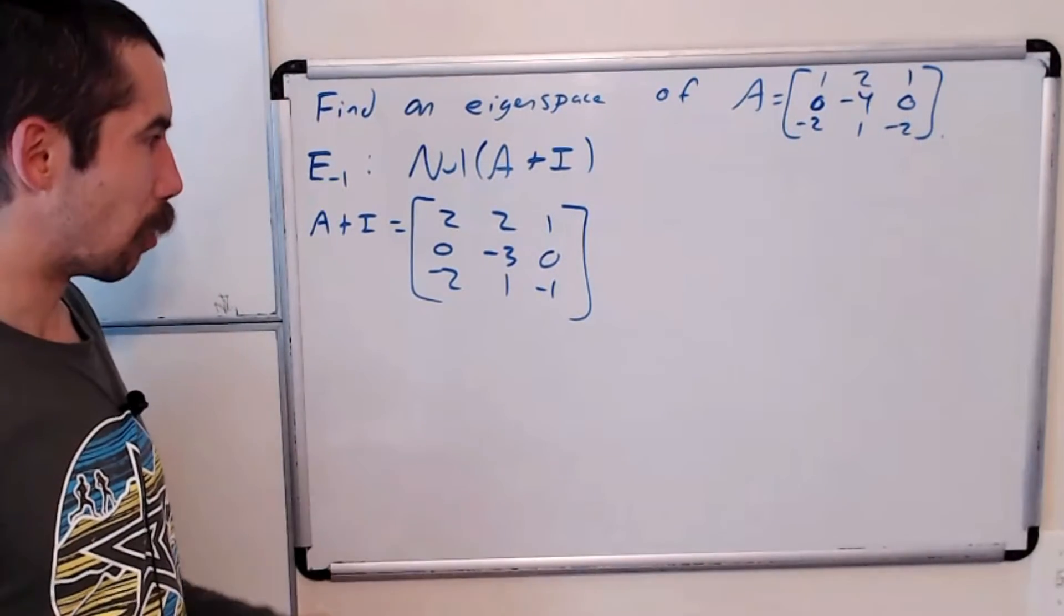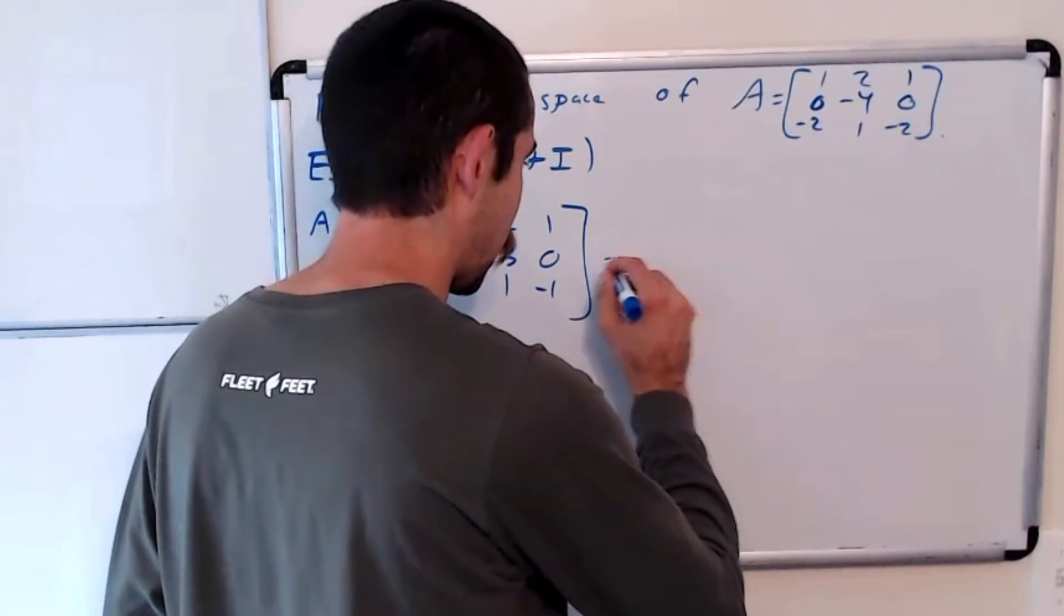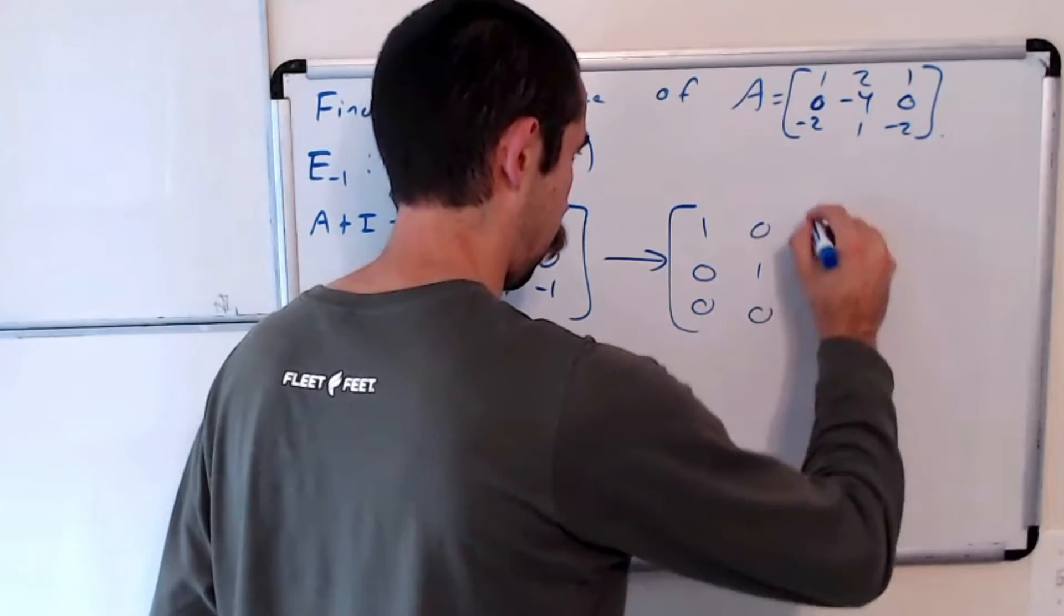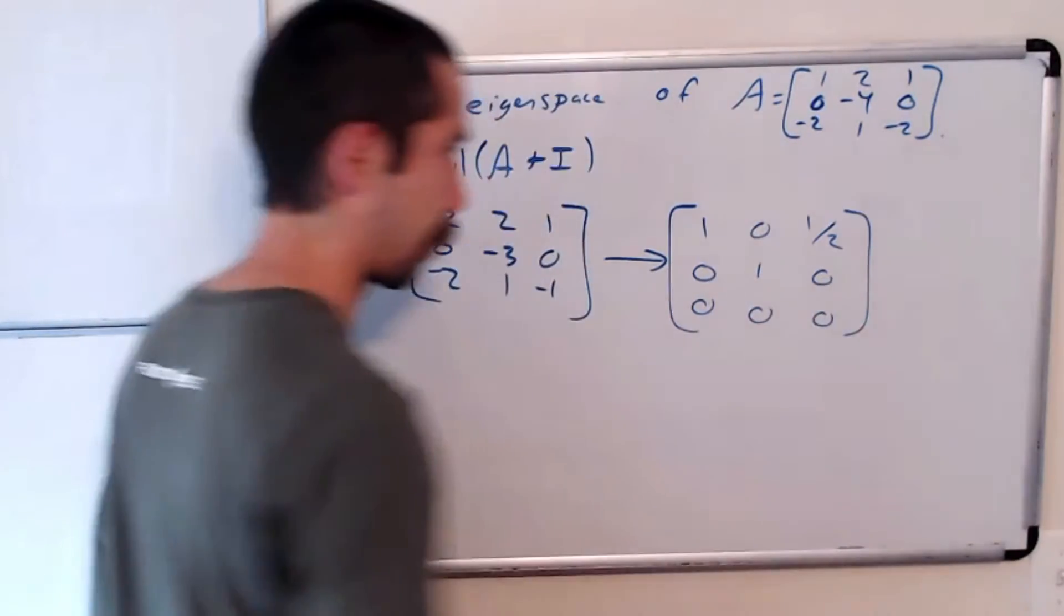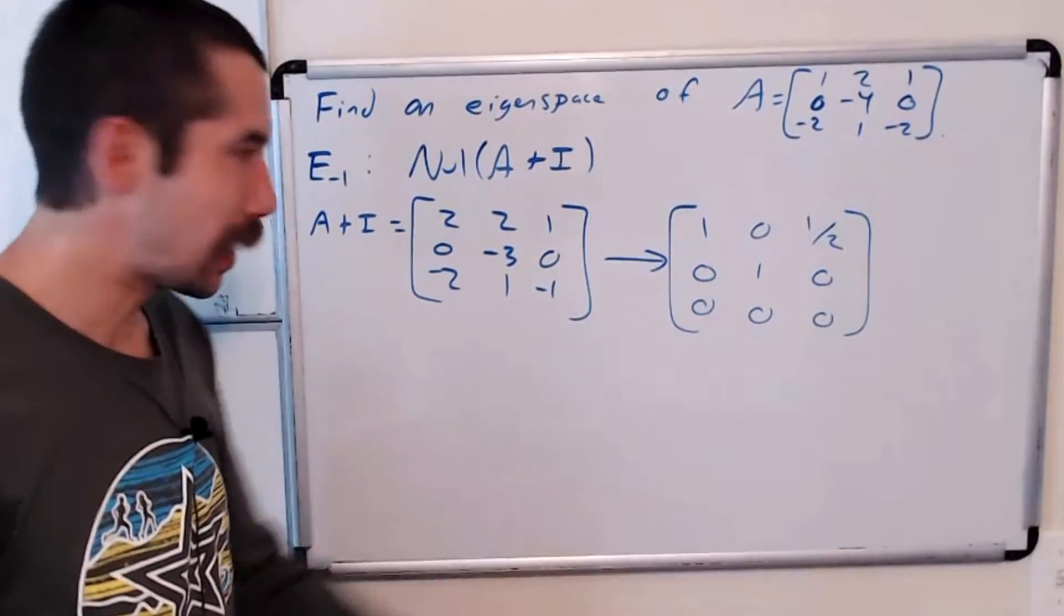We want to row reduce this, and this row reduces to the following matrix. We want to find the null space of this matrix.